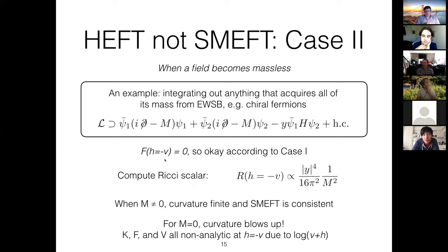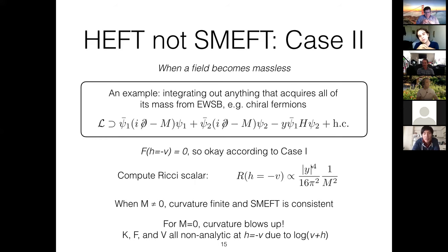A nice example is integrating out chiral fermions. Consider a vector-like set of fermions that get some mass from the Higgs and some vector-like mass of their own. This case is missed by the Manohar criterion because the function F in the HEFT parametrization vanishes at the O(4) invariant fixed point — by their criterion, this is perfectly acceptable. But you can compute the Ricci scalar: the Ricci scalar at the O(4) invariant fixed point, after integrating out these fermions, has a loop factor and goes like one over the square of the vector-like masses. For any finite mass, the curvature is finite and SMEFT is consistent. But if you take M to zero — so a particle becomes massless at the O(4) invariant fixed point — then the curvature blows up.